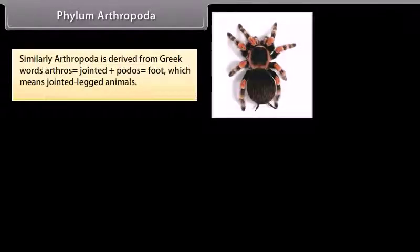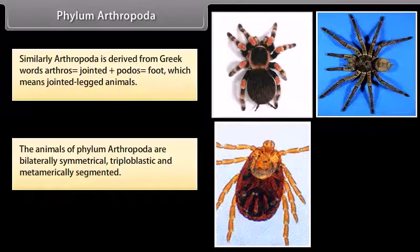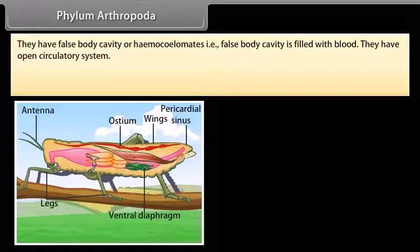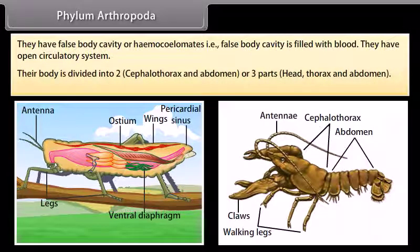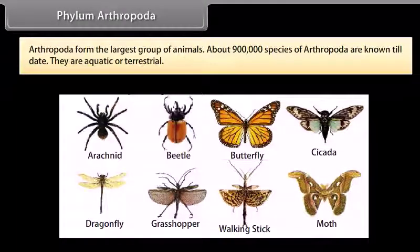Phylum Arthropoda. Arthropoda is derived from Greek words: arthron, jointed, plus podos, foot, which means jointed-legged animals. The animals of phylum Arthropoda are bilaterally symmetrical, triploblastic, and metamerically segmented. They have a false body cavity or haemocoel, that is false body cavities filled with blood. They have an open circulatory system. Their body is divided into two parts — cephalothorax and abdomen — or three parts: head, thorax, and abdomen. Arthropoda forms the largest group of animals; about 9 lakh species are known to date. They are aquatic or terrestrial.